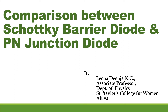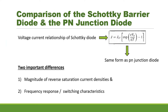Hi everyone, today we are going to compare Schottky barrier diode with P-N junction diode. We have already studied that the voltage-current relationship of a Schottky diode is given by the equation J equal to JST exponential(eVA / kT) minus 1, where VA is the forward applied voltage. This equation is in the same form as that of the P-N junction diode.